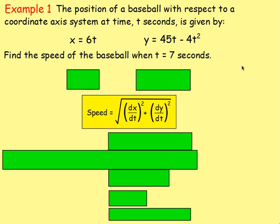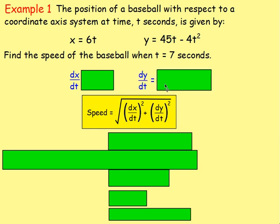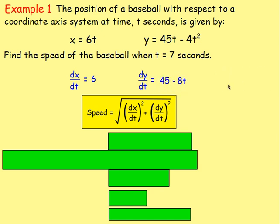To find the speed we need dx/dt and dy/dt, since both x and y are written in terms of the parameter t. Differentiating x with respect to t gives 6. Differentiating y with respect to t gives 45 − 8t.